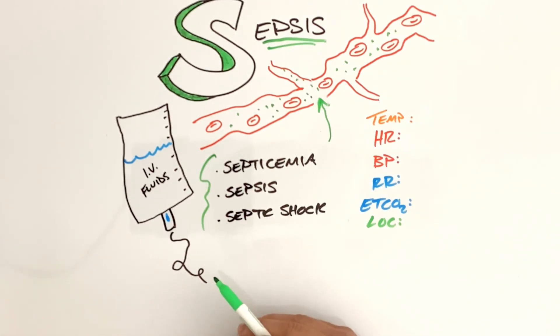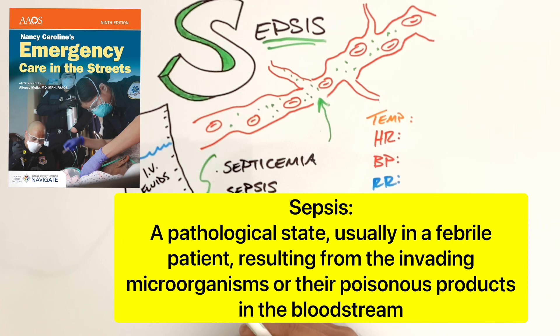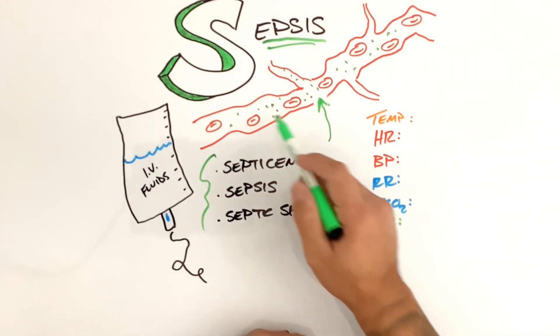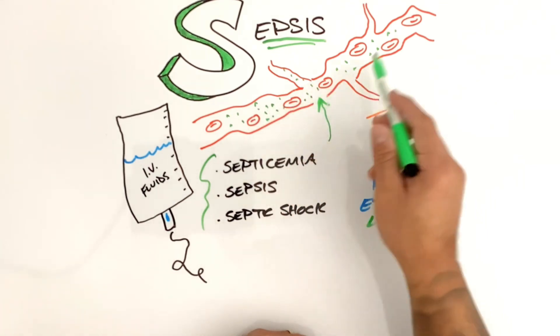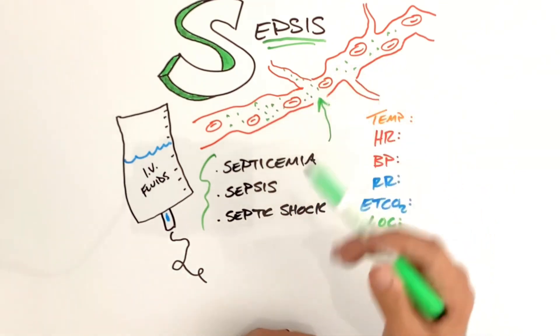What is sepsis? The definition of sepsis in our Nancy Caroline book defines it as a pathological state, usually in a febrile patient resulting from the invading microorganisms or their poisonous products in the bloodstream. That's what our little green dots are here in our bloodstream with our red blood cells and capillaries and everything else.